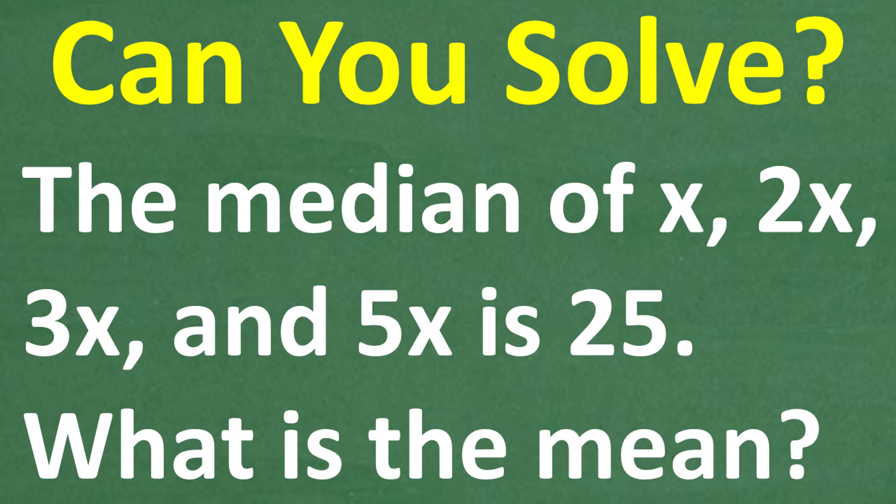In this video, we have an interesting little word problem that involves these two terms, the median and the mean. Of course, you're going to need to understand what those two words mean in order to do this problem. Let's go ahead and read the problem. It says the median of x, 2x, 3x, and 5x is 25. And the question is, what is the mean?